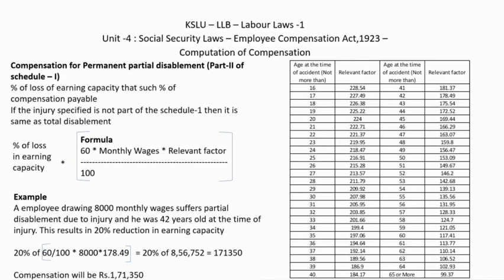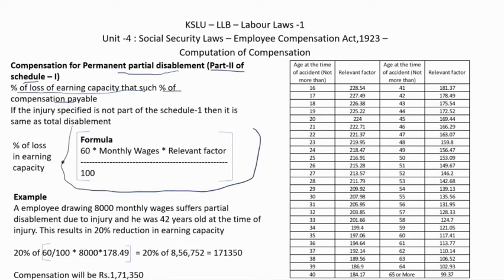For permanent partial disablement: if any injury or disease is listed in Part 2 of Schedule 1, we calculate the percentage of loss of earning capacity. The compensation payable is the total disablement compensation multiplied by the percentage of loss in earning capacity. So the formula is: total disablement amount × percentage loss in earning capacity.